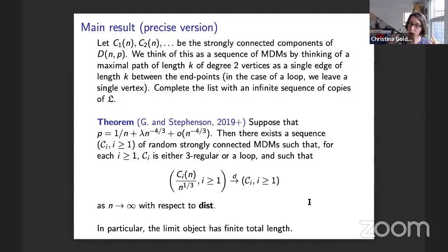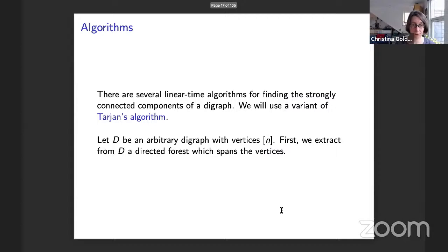What should you have in mind as a picture of this limit object? Really what we've got is a collection of directed cycles glued onto one another with real-valued lengths. We're getting convergence in the sense that for large enough n, you can match up the graph structures and the lengths are approximately right. Beyond a certain point, all we're seeing is loops.